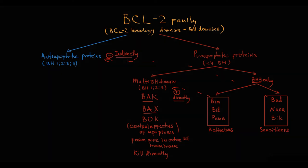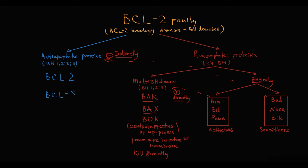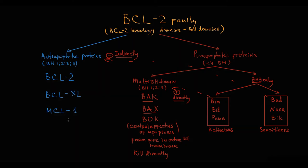These pro-apoptotic proteins are very delicately balanced by anti-apoptotic proteins that help mitochondria, and thereby the cell, survive. The major anti-apoptotic proteins we need to know are BCL-2, BCL-XL, and MCL-1. The mechanism of all these anti-apoptotic proteins is that they bind to pro-apoptotic proteins and sequester them, neutralizing their activity and thereby preventing apoptosis.